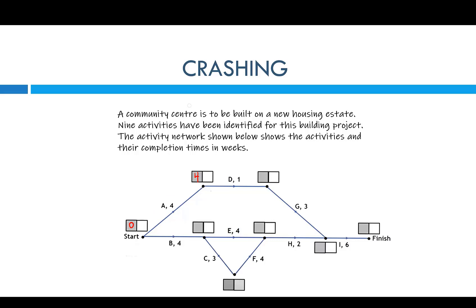Zero plus four gives me four — just looking at the left-hand side first. Four plus one gives me five. Down here, zero plus four gives me four. Four plus four would give me eight for that one, but I've got to take the longest way to get there. Going down here, four plus three gives me seven, and seven plus four gives me eleven. So eleven goes in there instead of eight because there are two ways to get there — forward scanning has to be the longest way. So we get eleven here, and eleven plus two is thirteen.